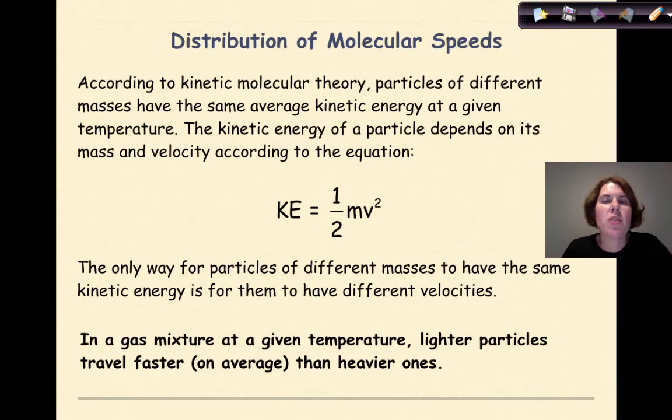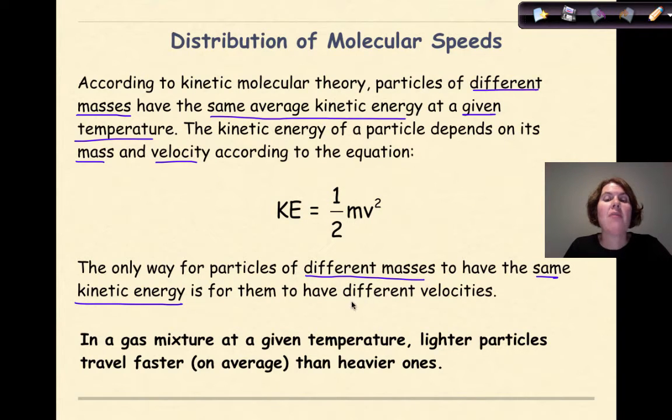So now let's talk about the distribution of molecular speeds. According to the kinetic molecular theory, particles of different masses have the same average kinetic energy at a given temperature. The kinetic energy of a particle depends on its mass and velocity, according to the equation, kinetic energy equals one-half mass times velocity squared. The only way for particles of different masses to have the same kinetic energy is for them to have different velocities. So in a gas mixture, at a given temperature, lighter particles travel faster on average than heavier ones.